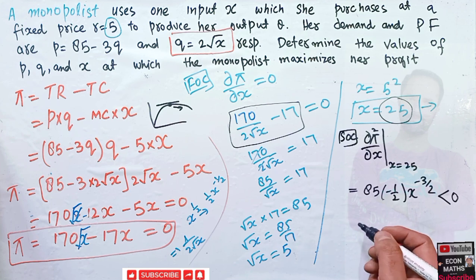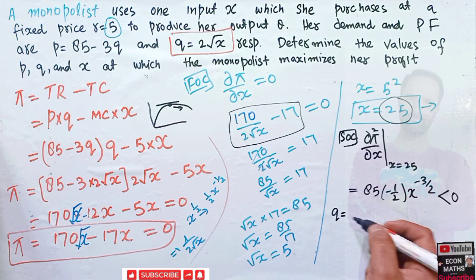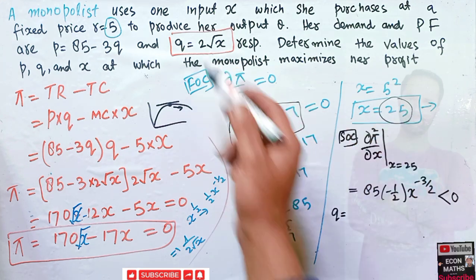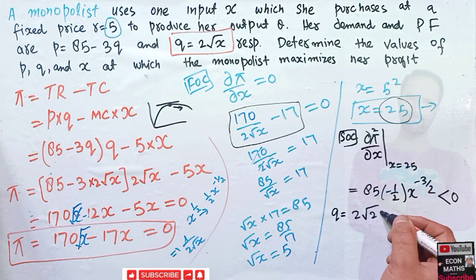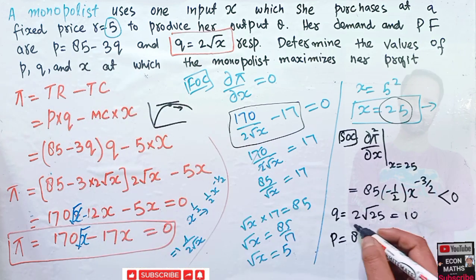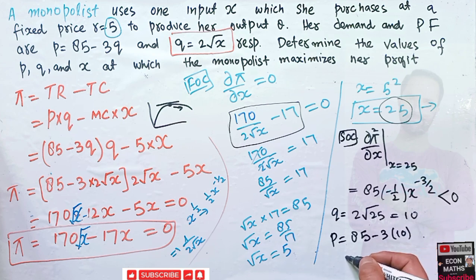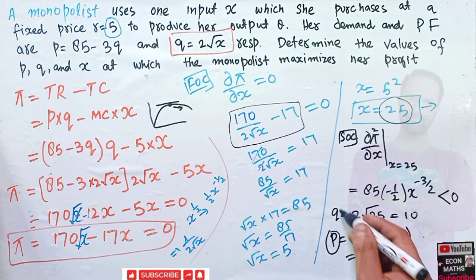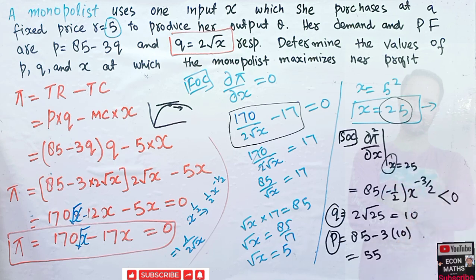So the profit maximizing level of input is X equal to 25. Plugging into the production function: Q equals 2 under root 25 equals 10. And plugging Q equal to 10 into the demand function: P equals 85 minus 3 times 10 equals 55. So we get the profit maximizing price P equal to 55, quantity Q equal to 10, and input X equal to 25.